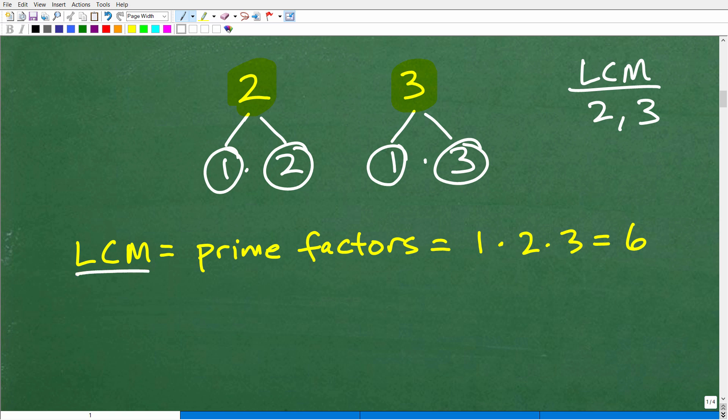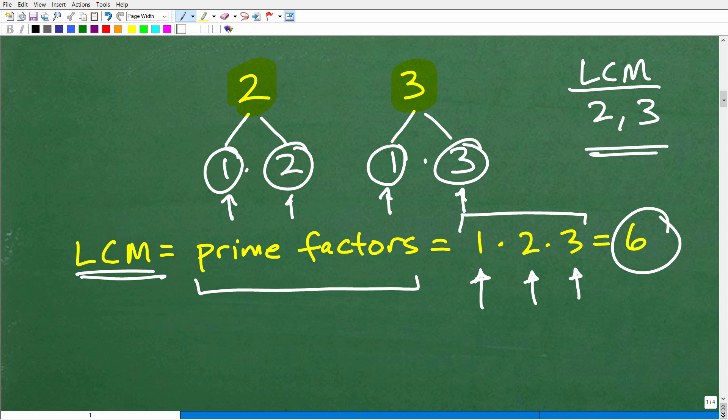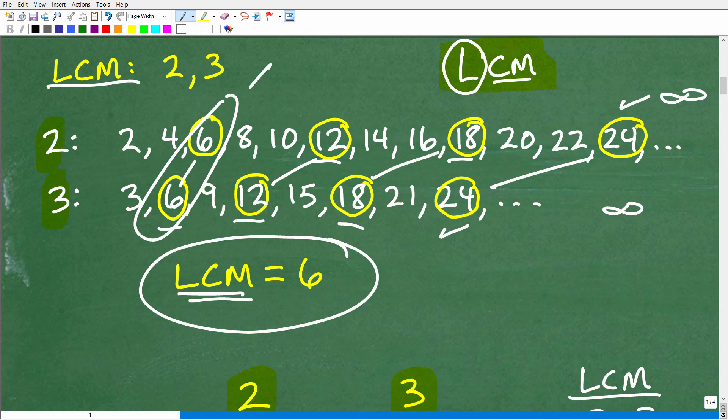So the lowest common multiple is going to be the product of all the prime factors. So let's go ahead and list all the prime factors. So one is a prime factor of all the, between the two numbers you're looking at, we have to have them represented here. So one, so two is a prime factor. So we've got that represented. One is already represented right here. And then we need a three. So now when I multiply all my prime factors together, one times two times three, guess what? That is six. That was the answer. Remember, we identified that over here.